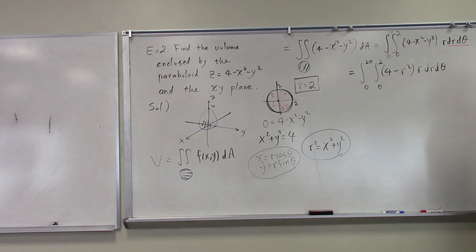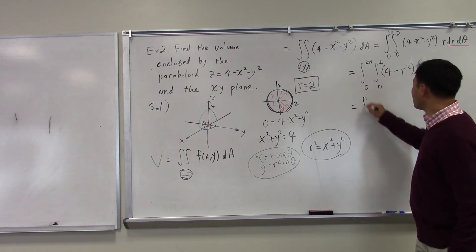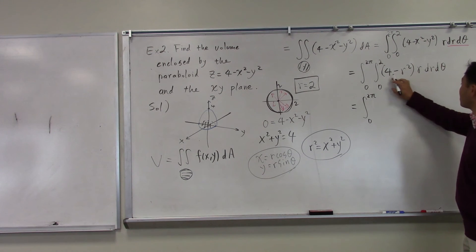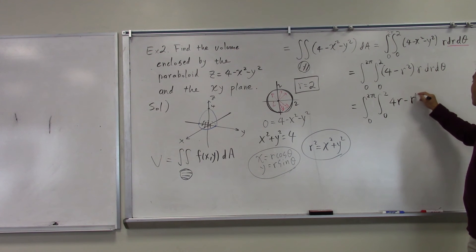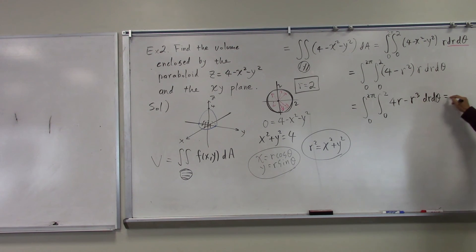Now, that's a very easy integral to compute. You integrate this, oh by the way, you should simplify before. So it's 4R minus R cubed dR dθ. And if you integrate this, this is 2R squared minus one fourth of R to the fourth, and you're plugging in 2 and 0 dθ.